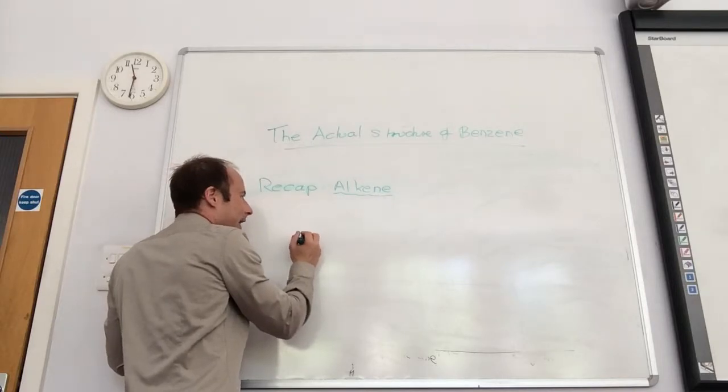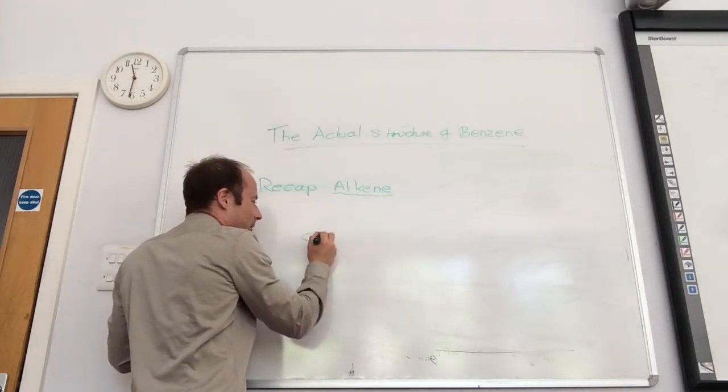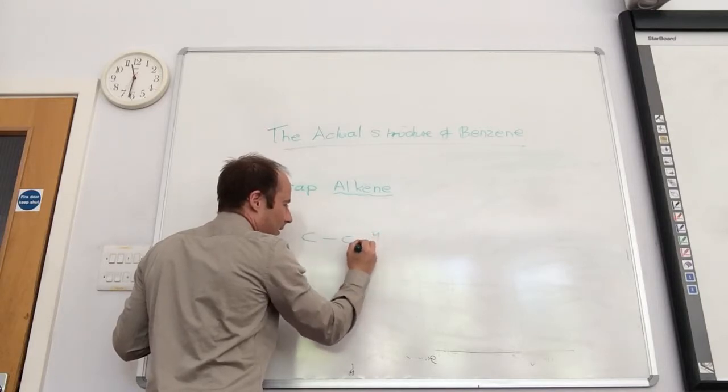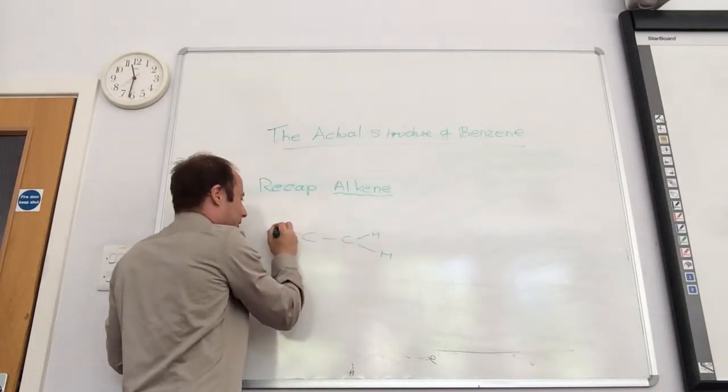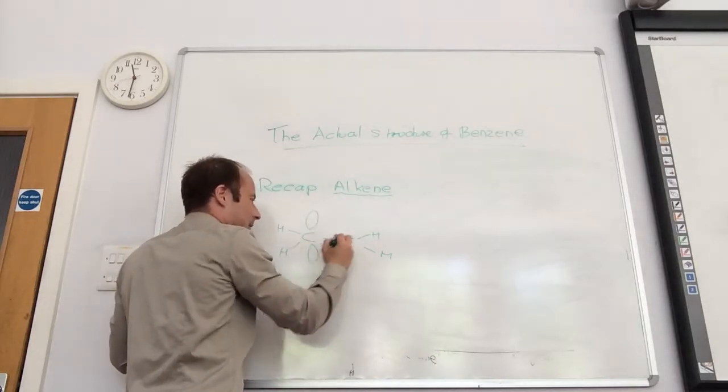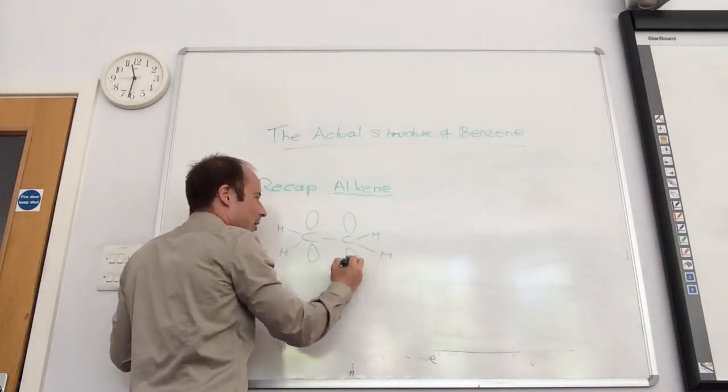So, alkenes. When we looked at alkenes, we said we've got a carbon-carbon double bond, and then we had hydrogen, let's just do it like that, hydrogen, hydrogen, hydrogen. And then on each carbon, there was a p-orbital.